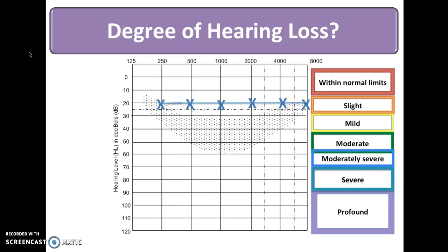So let's review audiometric symbols on the audiogram. In this image, you can see we've moved our degrees of hearing loss over to the right side of the screen so we can view the audiogram more clearly. On this audiogram, we see left ear air conduction thresholds depicted at 20 dB. When air conduction thresholds are at 20 dB, we can say a slight hearing loss is present.